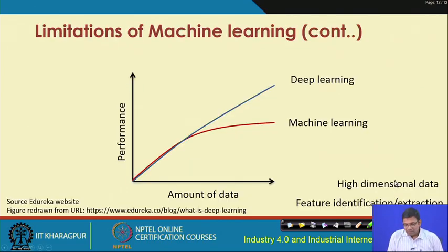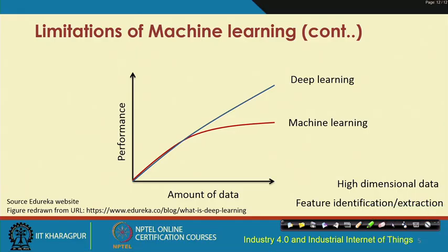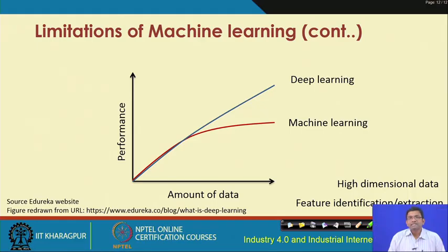Comparing ML and DL with respect to volume of data: with an increase in the amount and dimensionality of data, DL gradually becomes more popular and useful — its performance improves. Whereas ML performance will gradually come to a stagnation. Another limitation is that feature identification and extraction is required in ML, whereas it is not required explicitly in DL.